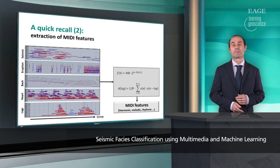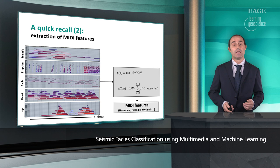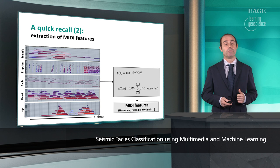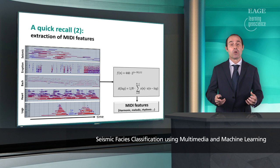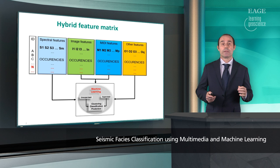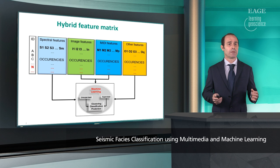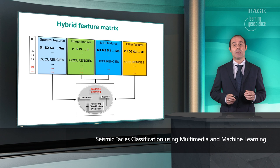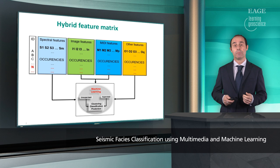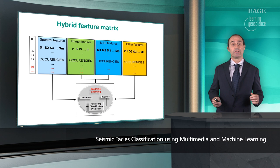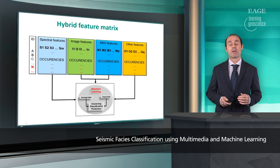You can see that we can represent every type of information using a MIDI protocol. From these MIDI files we extract features related to frequency, amplitude, but also harmonic properties, melodic patterns, and rhythmic patterns contained in the data. We can extract more than 100 MIDI attributes, and we include all these MIDI attributes in the same hybrid feature matrix that also includes spectral features extracted from seismic data, image features, and text features — any type of attribute — which forms the input of our multimedia machine learning system.